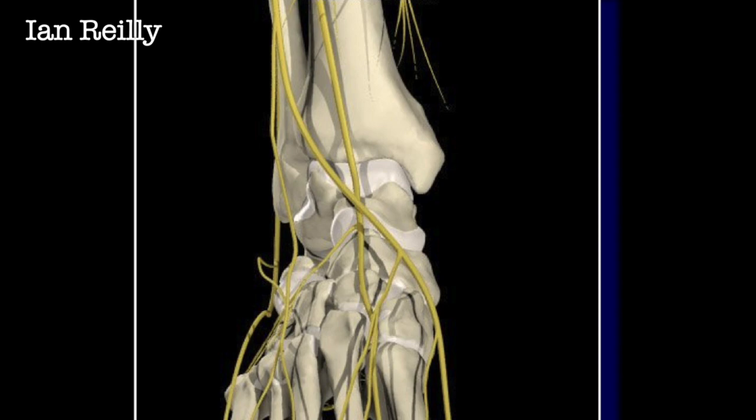The superficial peroneal nerve exits the deep fascia in the lower lateral third of the leg. It can come out as one or two branches. Either way, it will form two branches as it goes forward into the dorsal medial aspect of the foot.